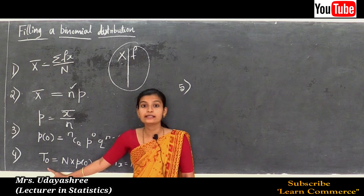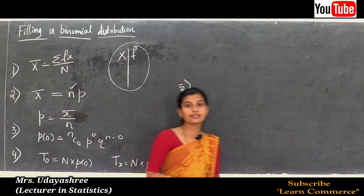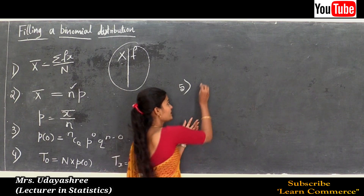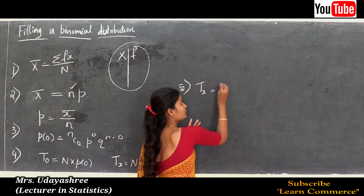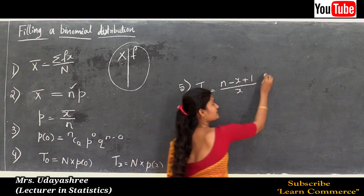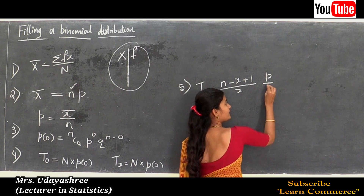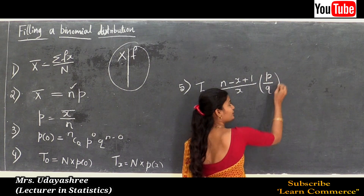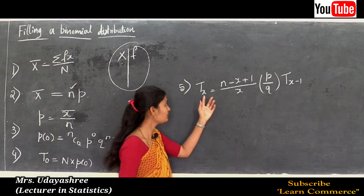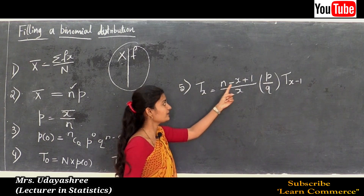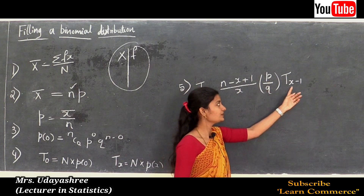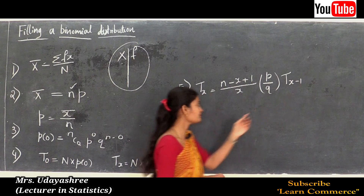Next, the remaining theoretical frequencies are obtained using the recurrence relation. The formula is: T(x) = [(n − x + 1) / x] · (p/q) · T(x − 1).